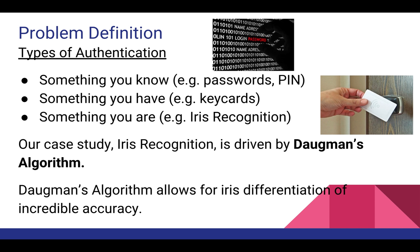The problem with using something you know as a form of authentication, like a password, is that it can be hacked via brute force methods or dictionary attacks. Additionally, it can be forgotten, and password strength conflicts directly with ease of use. The problem with using something you have as a form of authentication, like a keycard, is that it can be lost, duplicated, or stolen.